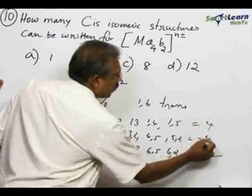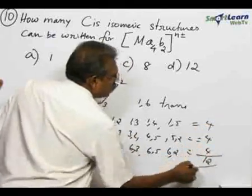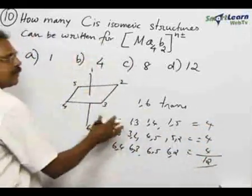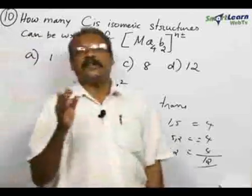In total 4 plus 4, 8 plus 4, 12. So in total 12 isomeric structures possible. So go for the option D12.